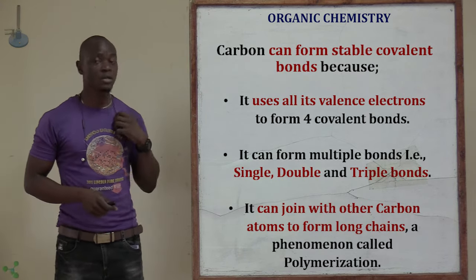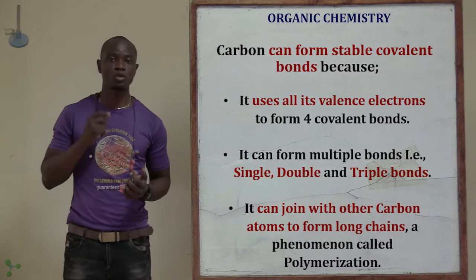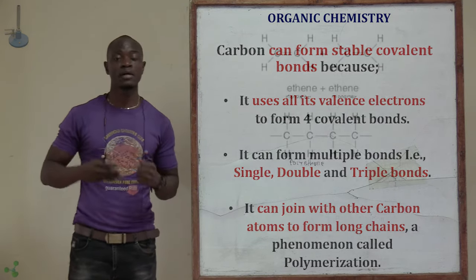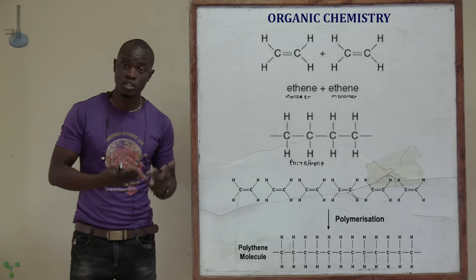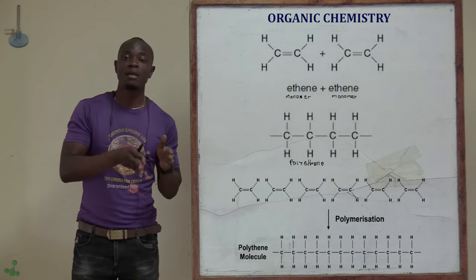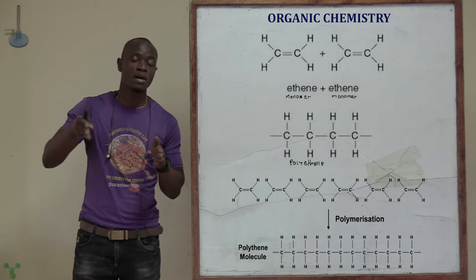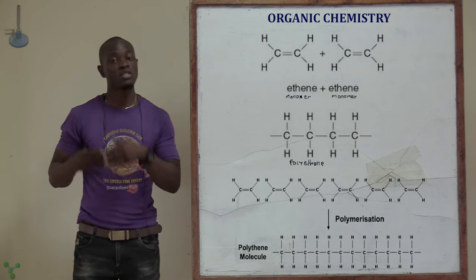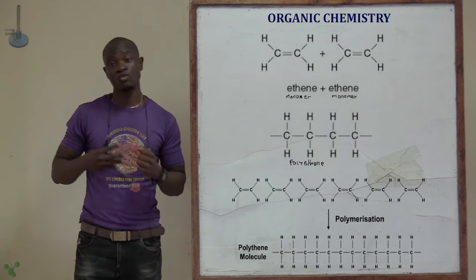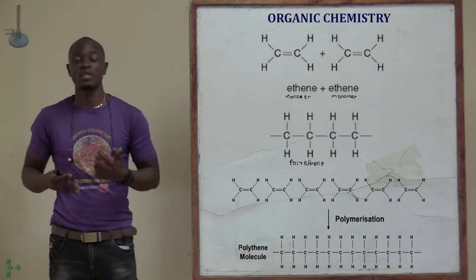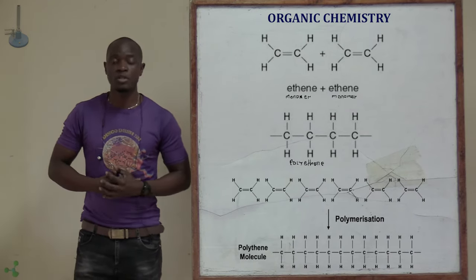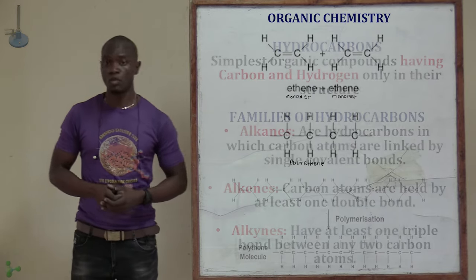The third reason is that the carbon atom is able to join with other carbon atoms to form very long chains, a phenomenon which is called polymerization. The different monomers of carbon can react with other monomers of carbon to form a very long chain referred to as a polymer. The process by which monomers react to form a polymer is called a polymerization reaction. We are going to look at this in the upcoming subtopics.